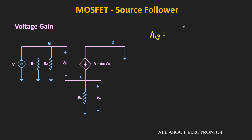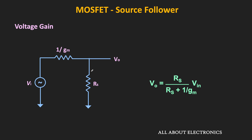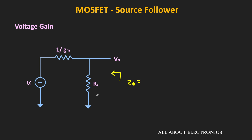Considering the output resistance of the MOSFET as infinite, the voltage gain equals Rs divided by (1/Gm plus Rs). From this expression, if we draw the equivalent circuit, we can use it to easily find the output resistance. The output resistance is the equivalent impedance seen from the output side by considering all independent sources as zero. When the input signal is zero, the output resistance is the parallel combination of Rs and 1/Gm. That means the output impedance of this source follower is equal to Rs parallel 1/Gm.